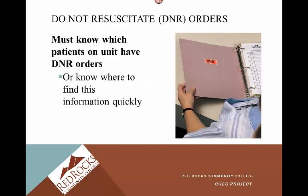Do not resuscitate (DNR) orders are very important. We always respond to emergencies trying to perform life-saving measures, but if someone has a DNR order, you must not attempt to resuscitate them — they have designated that they don't want that, and you are liable if you resuscitate someone with a DNR. You must know which patients on your unit have DNR orders. These can be found on the chart, on patients' or residents' doors, or in the home — know where to find this information quickly.